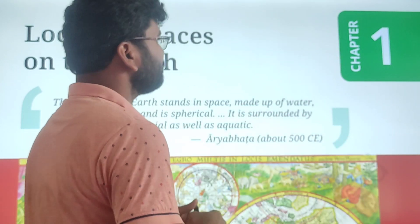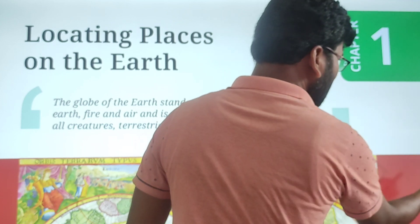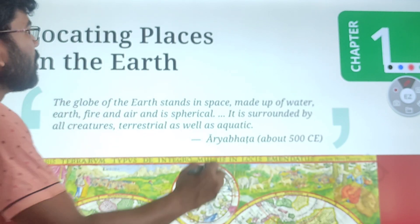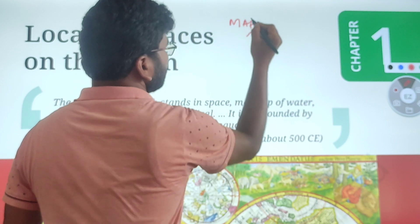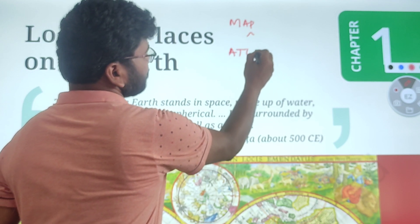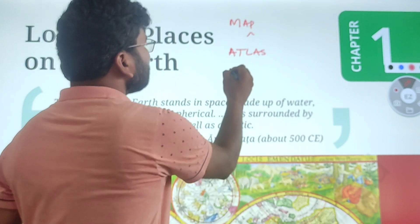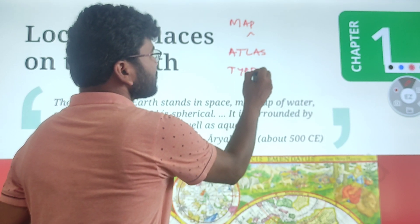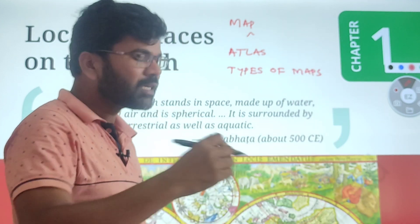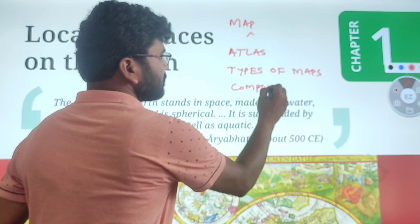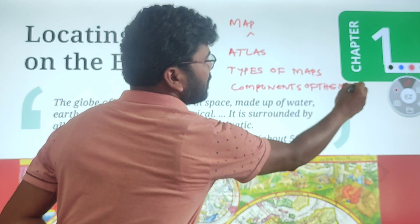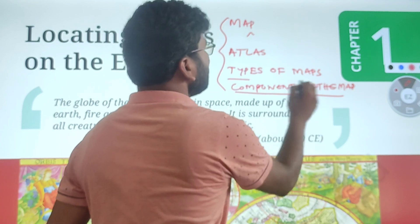Let us directly move into the concept of locating places on the earth. In this video, we will mostly cover: what is meant by a map, what is an atlas, what are the types of maps, and the components of the map. We will discuss these four important concepts.